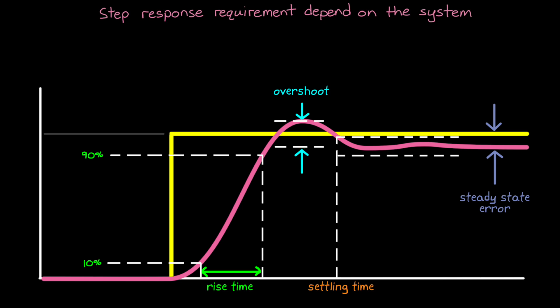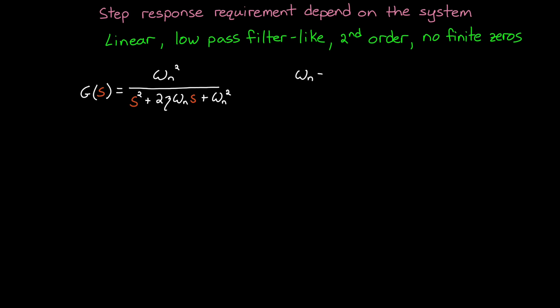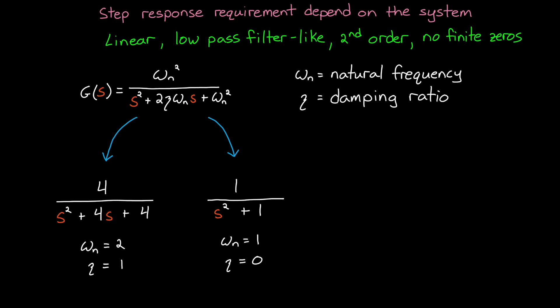In fact, if we narrow the behavior of the tracking system that we're designing even more to one that is linear and low pass filter like, but is also second order with no finite zeros, then we can simplify the design requirements to just two parameters. Natural frequency and damping ratio. These types of second order systems can be described in a form that you've probably seen many times in other videos and textbooks. But if you haven't, don't worry. All this is saying is that if your system transfer function has no s's in the numerator, so no finite zeros, and a second order denominator, then you can write your system as a function of omega n and zeta.